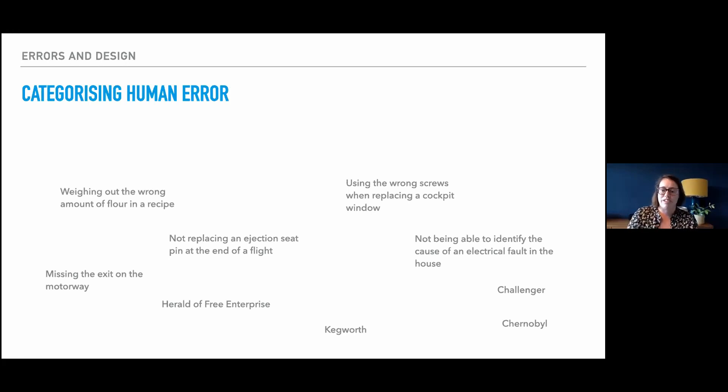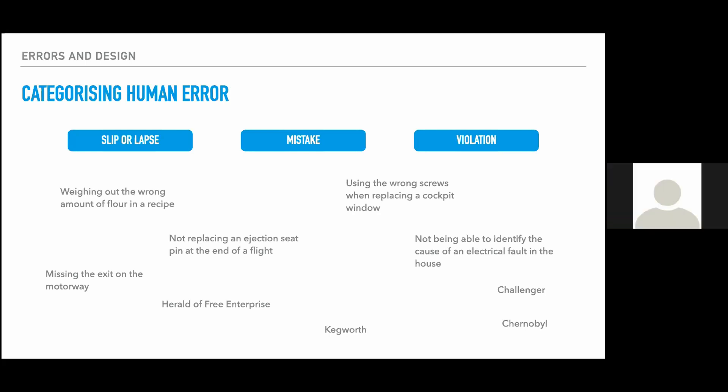The second model that I was just going to talk through briefly is James Reason's model of slips and lapses, mistakes and violations. The slips and lapses and mistakes fall broadly similar to skill and rule-based errors. So a slip or a lapse Reason categorises as an error of action, so in implementing your chosen behaviour, and a mistake is an error of decision making. Certainly missing the exit on the motorway and weighing out the wrong amount of flour in a recipe, very much in the errors of action type of category. I think still the ejection seat pin falls perhaps somewhere between the two. But we can start seeing more clearly something like the cockpit window screws, the electrical faults in the house, these are much more on the mistakes.